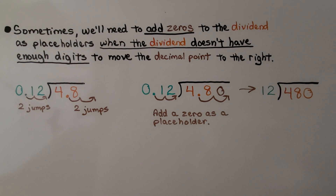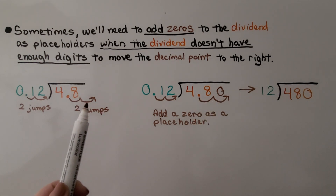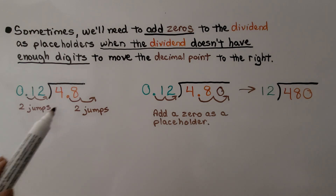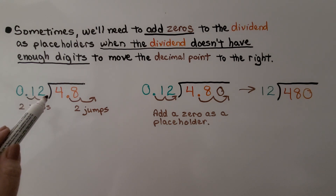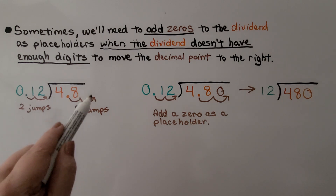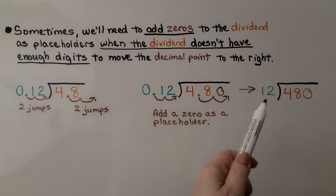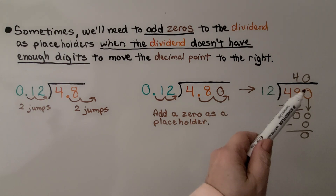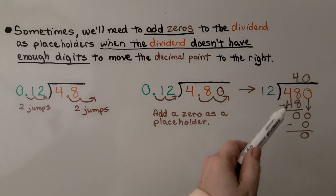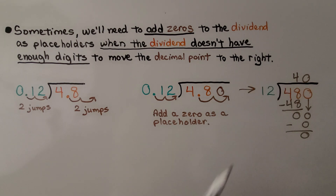Sometimes we'll need to add zeros to the dividend as placeholders when the dividend doesn't have enough digits to move the decimal point to the right. Here we have 4 and 8 tenths divided by 12 hundredths. We need this decimal point to move two jumps, and if we do that to the dividend, we're going to be over here — there's nothing there, so we can put a zero there as a placeholder. Now we have 480 divided by 12. 12 can't fit into 4, so we fit it into 48. 12 times 4 is 48. We subtract that and get zero. That zero comes down, and 12 goes into zero zero times, so we put a zero up there. We know 480 divided by 12 is 40.